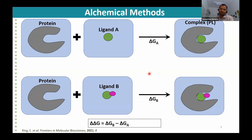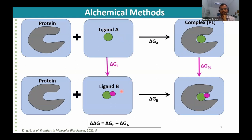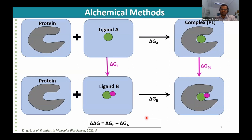Can we calculate delta delta G at a much cheaper price? Yes — if we can change ligand A to ligand B in water through unphysical alchemical states, and similarly change ligand A to ligand B when bound to the protein alchemically, then since the thermodynamic cycle is closed, delta G_B minus delta G_A equals delta G_PL minus delta G_L. So we can calculate delta delta G as the difference between the two alchemical legs instead of the two physical legs.